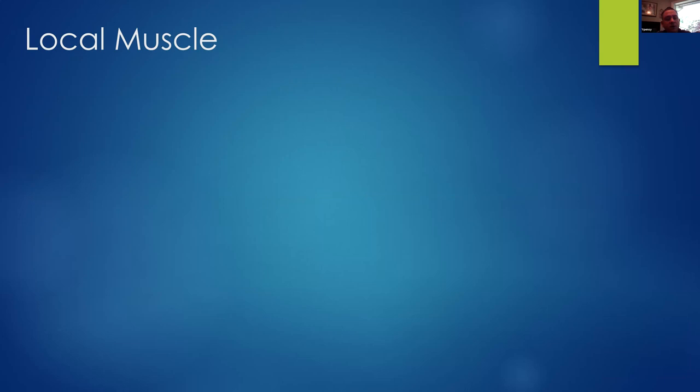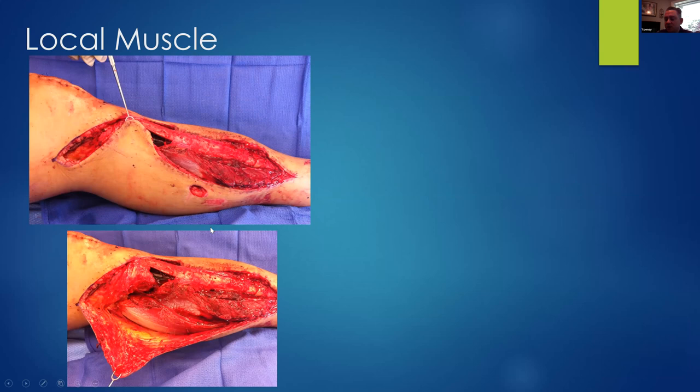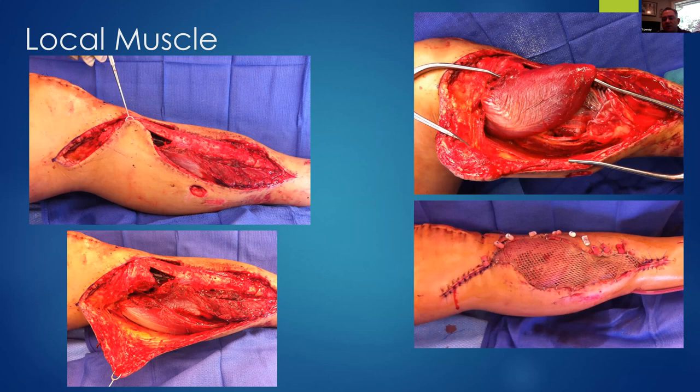Local muscle: everybody knows the gastrocnemius flap — the medial sural artery is its obvious supply. One important thing to recognize is that the gastroc can be turned to cover the critical defect, which here is the exposed nail. Everything distal, although it looks expansive and perhaps not amenable to a local flap, actually can be covered once you recognize that the critical defect is just the open tibia with the exposed nail. The gastroc covers it quite nicely, as does the periosteum and soleus more distally.